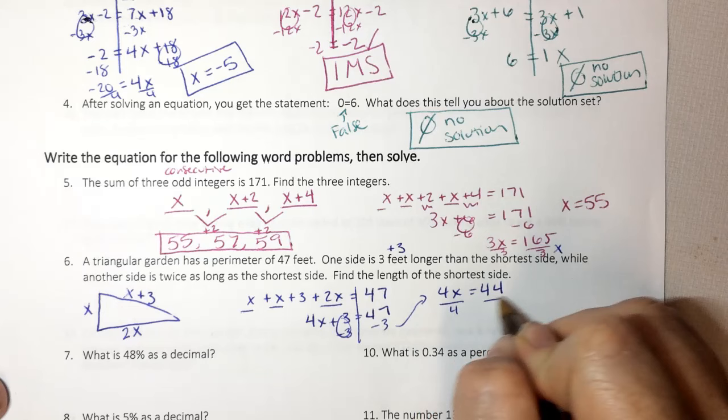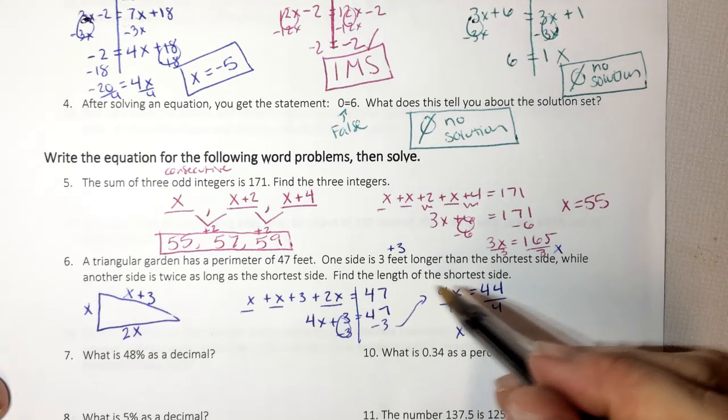Before I box that, I need to go back and read the question. It says find the length of the shortest side. x does represent my shortest side. So it is 11 feet.